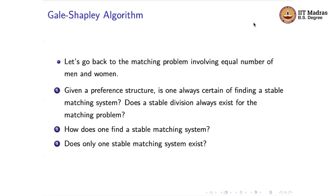Now that we have seen several examples of stable matching and hopefully understand them better, let's go back to our fundamental problem. Remember the problem was that you had a community of n men and n women, and we were trying to think of what is a good way of pairing them up — a matching involving one man and one woman.